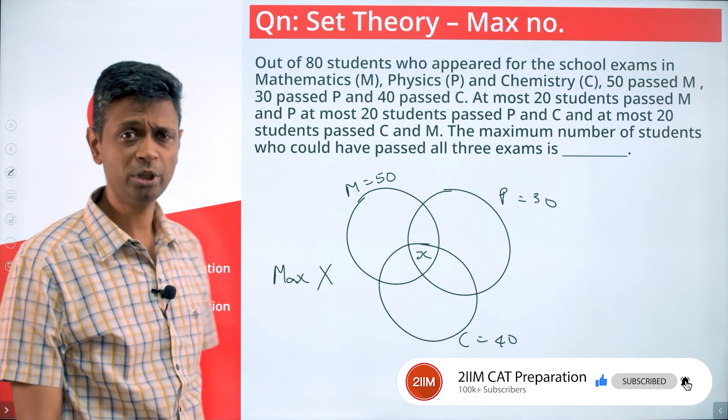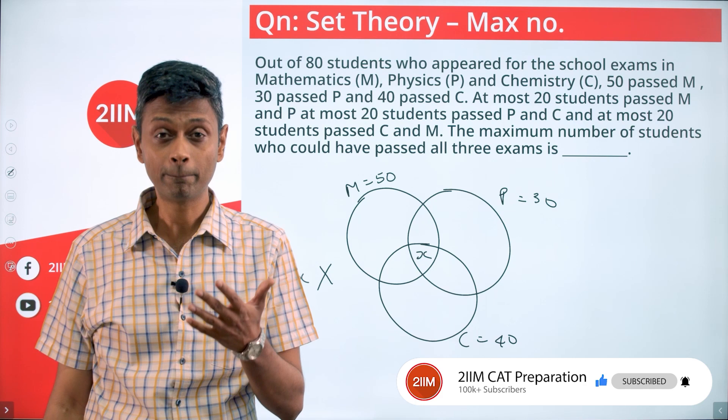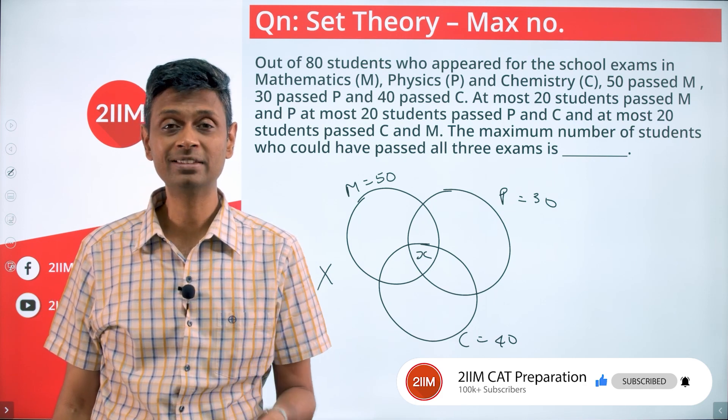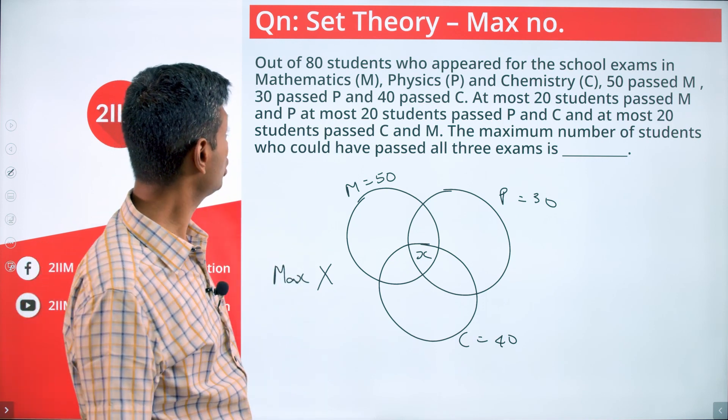We have a wonderful formula: A union B union C equals A plus B plus C minus A intersection B minus B intersection C minus C intersection A plus A intersection B intersection C.